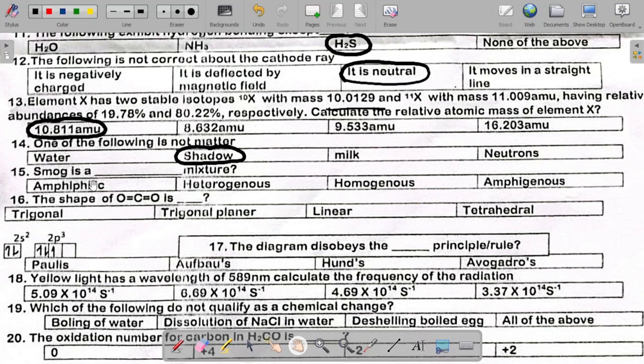Number 15 says smog is a dash mixture. The answer here is heterogeneous. So please note that smog is actually a heterogeneous mixture. For heterogeneous mixture, we have that the components are not evenly distributed. So for a heterogeneous mixture, the components that make up the mixture are not evenly distributed and they can be distinguished from one another. And smog falls under that category.